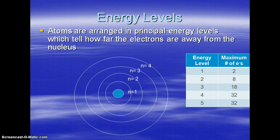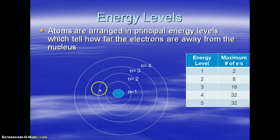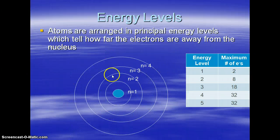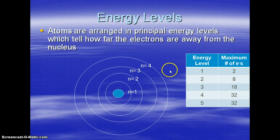Atoms are arranged with the nucleus in the middle and the electrons are on the outside. These electrons are arranged with energy levels, and the energy levels basically are describing how far away from the nucleus electrons are. We have determined that only a certain number of electrons can occupy each ring or each energy level.